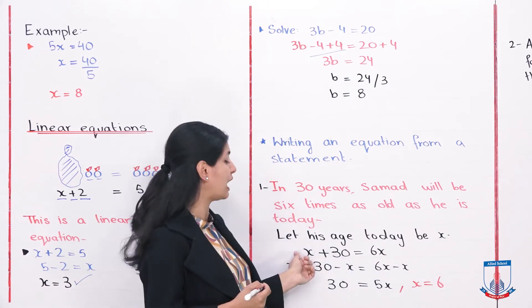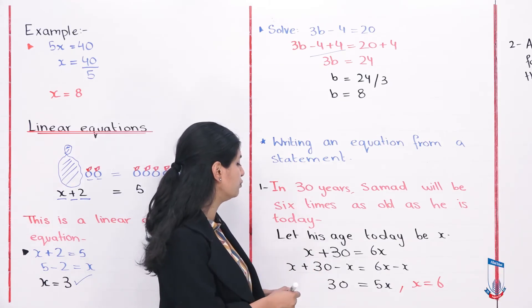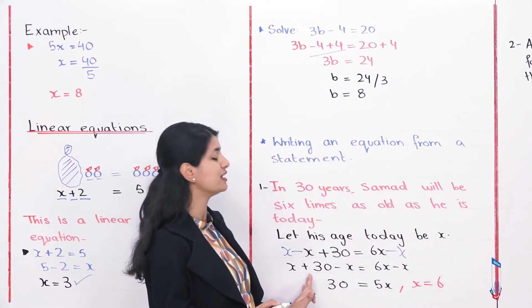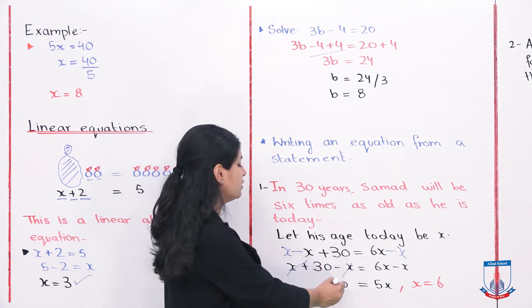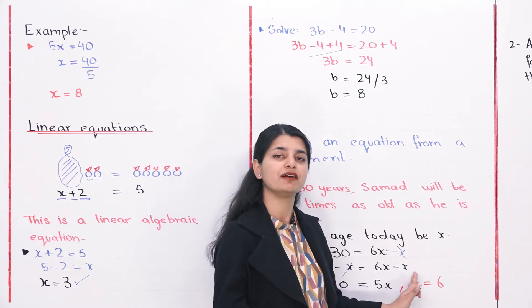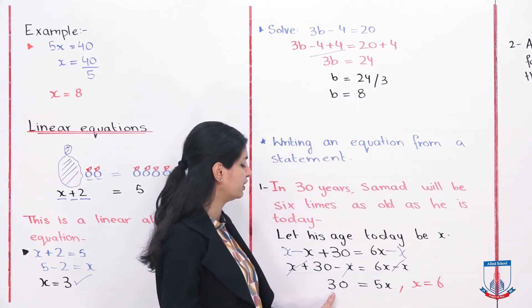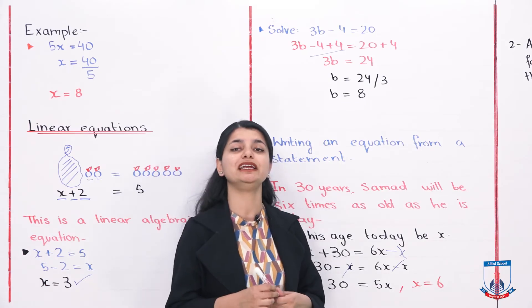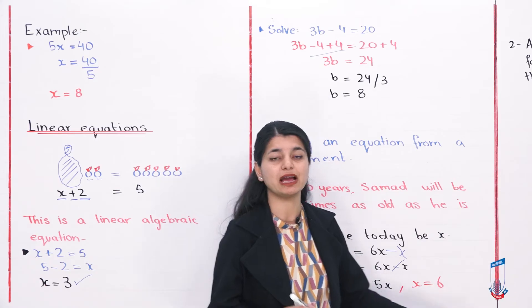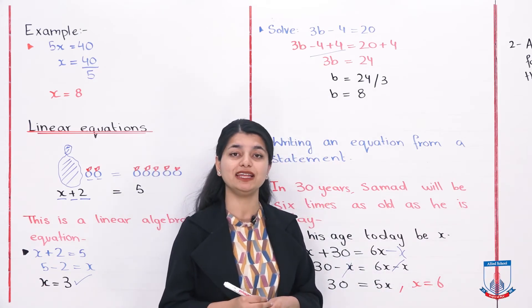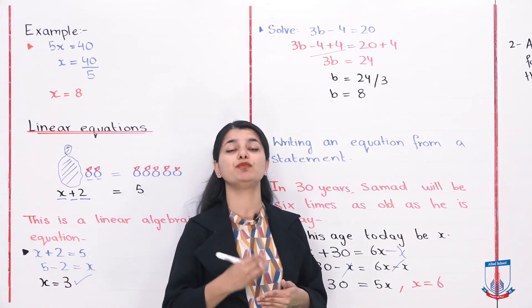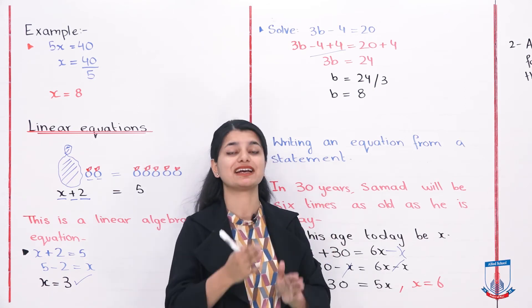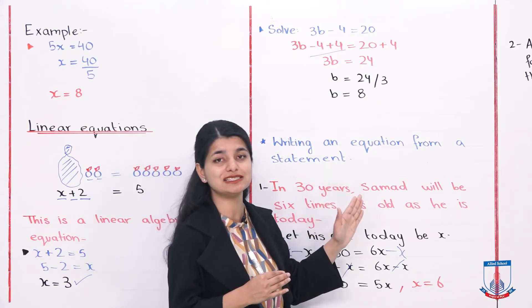To solve x plus 30 equals 6x, subtract x from both sides. x plus 30 minus x gives 30, and 6x minus x gives 5x. So 30 equals 5x. To isolate x, divide both sides by 5 — 30 divided by 5 is 6. So x equals 6. The approach was: interpret the statement, assign a variable to the unknown, then apply operations following the instructions in the statement.